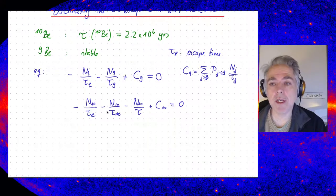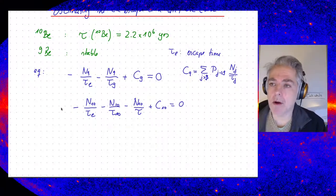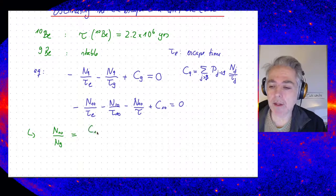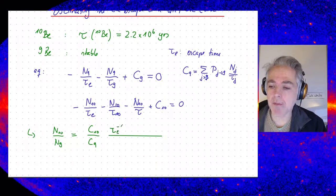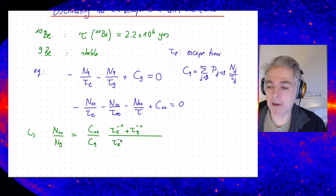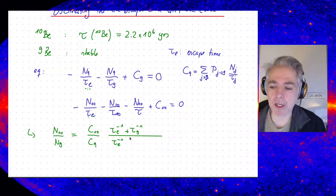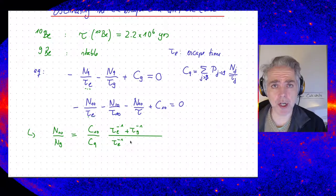Now we can use these two equations — they are just algebraic equations — to calculate the ratio of N10 to N9. After shuffling the terms around, for N10 over N9 we get the ratio C10 over C9. Then we get the escape time, the spallation time tau_10, and the decay time. We assume the escape times are the same for both isotopes — a universal escape time that depends only on charge number, not on the isotope or mass number.